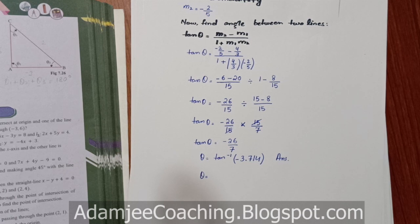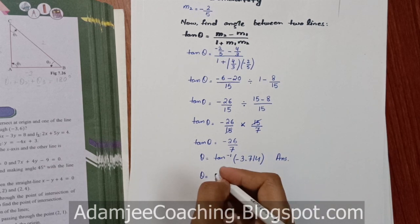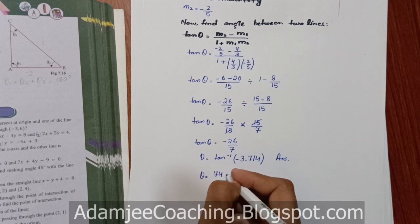Minus ka 3.714. This is the answer. Agar humisko majeed find out karen to theta ki value tan inverse 3.714, to yeh aa raha hai 74.93. Theek hai, aap chahein to isko solve karke bhi likh sakte hain, 74.93.